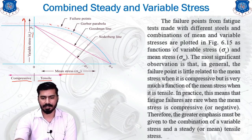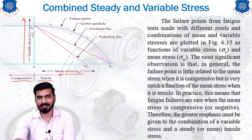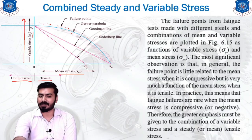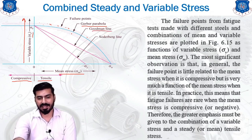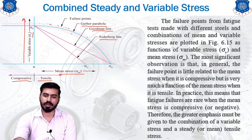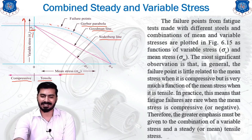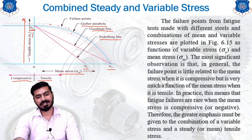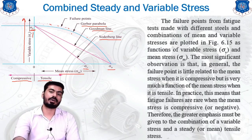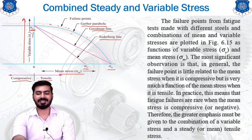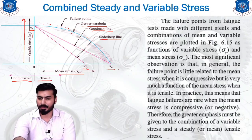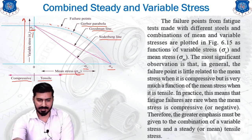To design a component with this type of failure, there are three different methods. There is a parabola suggested by Gerber — Gerber's parabola. There is Goodman's line, which is a straight line, and Soderberg's line, also a straight line. Goodman's line runs between sigma-e and sigma-u, while Soderberg's line runs between sigma-e and sigma-y. Here, sigma-y is yield point stress, sigma-u is ultimate stress, and sigma-e is the endurance limit stress.